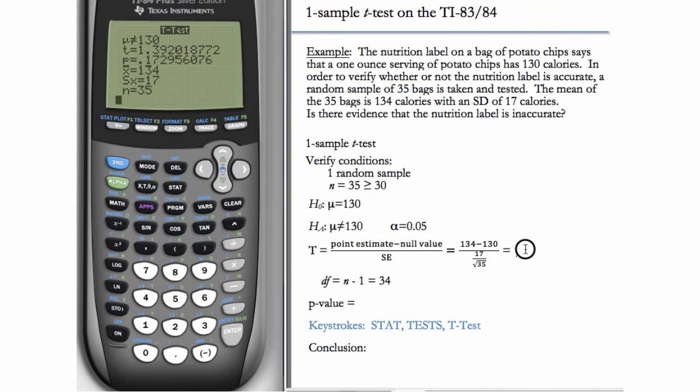And we get our t-statistic of about 1.39. And we get our p-value as well, which is great. So this is 0.17. This is bigger than alpha. And so our conclusion is we do not reject H sub 0. We do not have evidence that the label is inaccurate.